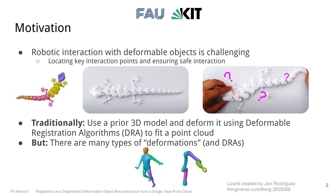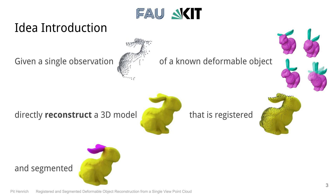I would like to introduce our idea to obtain 3D model and segmentation information for many kinds of deformable objects. The idea is that given a single observation — for example, a point cloud of a known deformable object — we directly reconstruct a 3D model that is already registered and segmented, based on the observation.